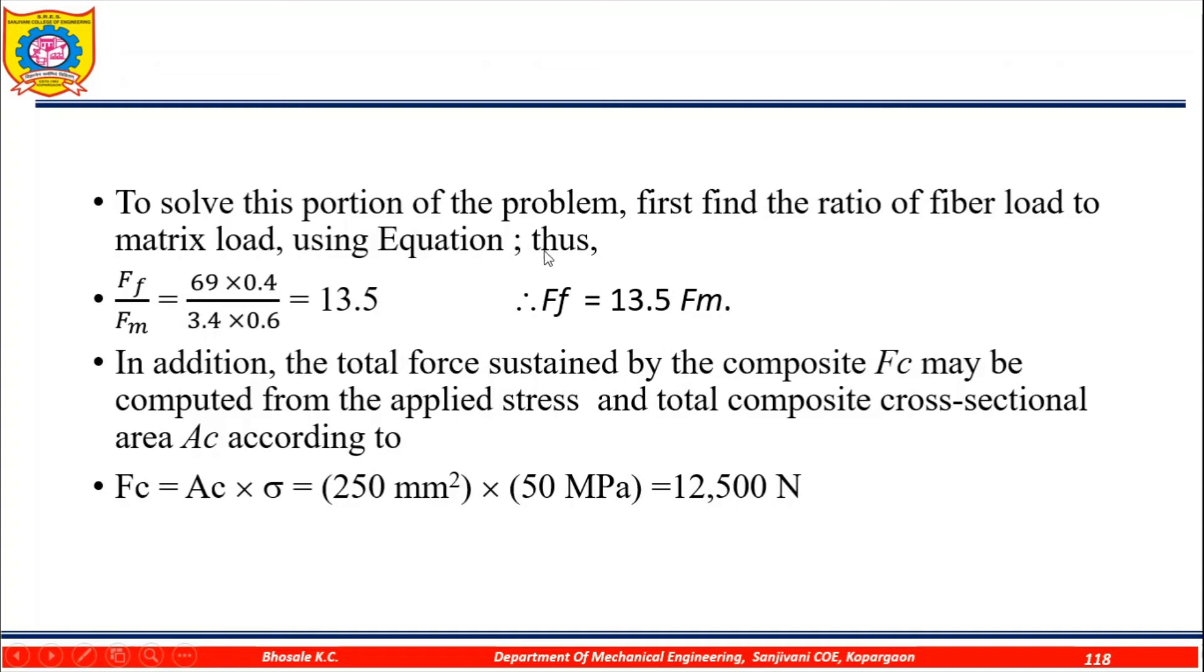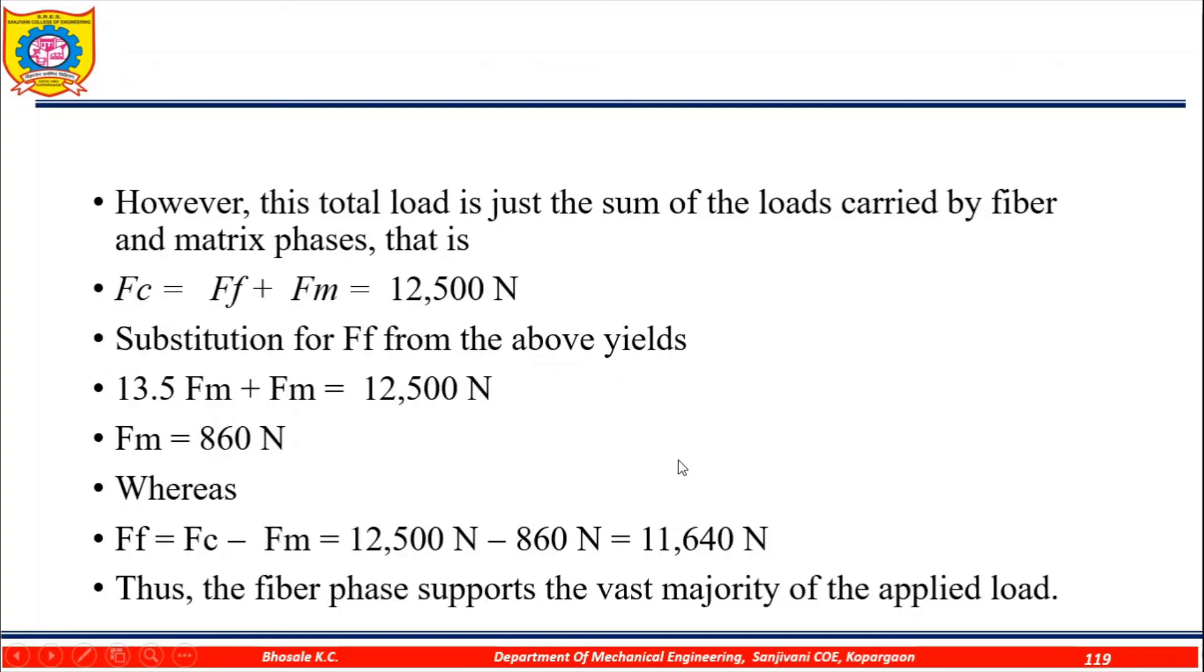To solve this portion of the problem, first find the ratio of the fiber load to the matrix load using the equation. We are getting F_f equals 13.5 F_m. In addition, the total force sustained by the composite F_c may be computed from the applied stress and total composite cross sectional area according to F_c equals 12,500 newton. However, this total load is just the sum of the loads carried by the fiber and matrix phases. That is, F_c equals F_f plus F_m equals 12,500 newton.